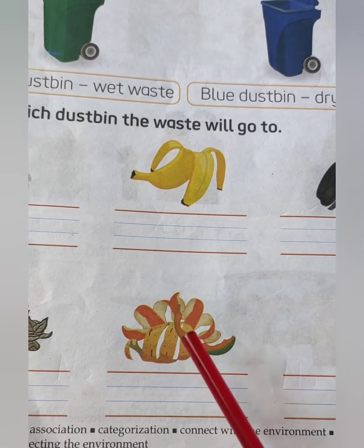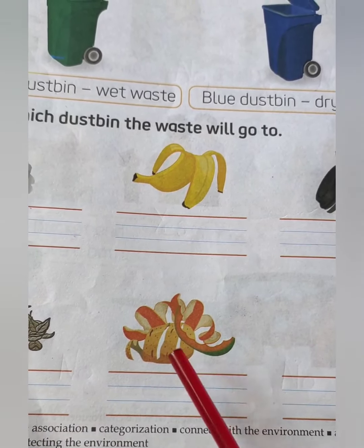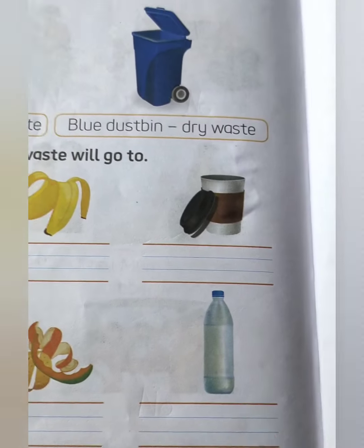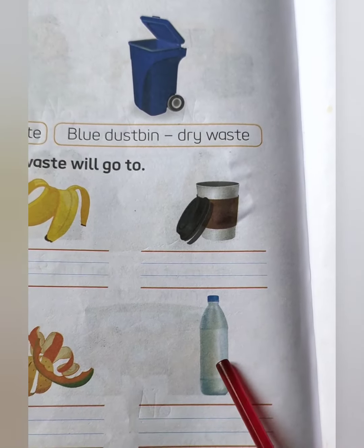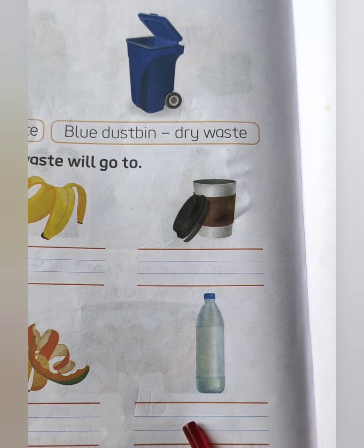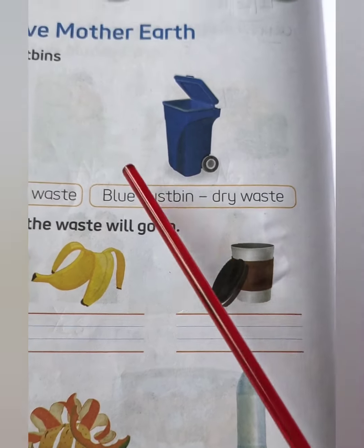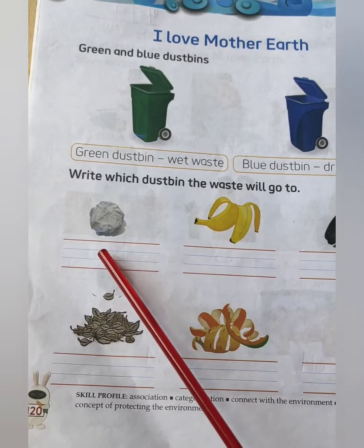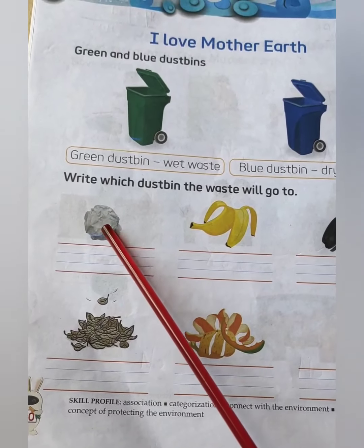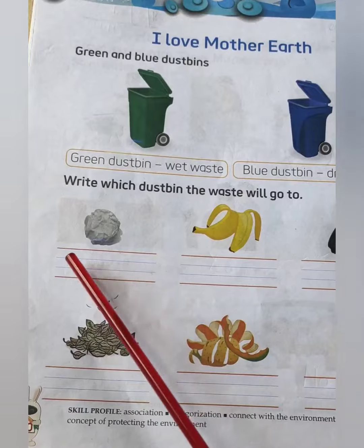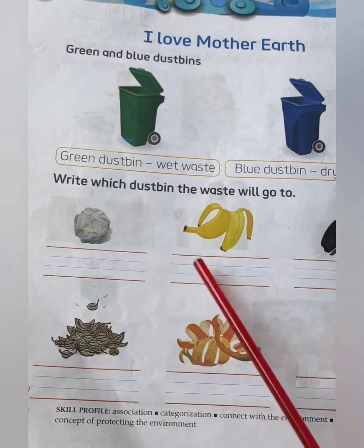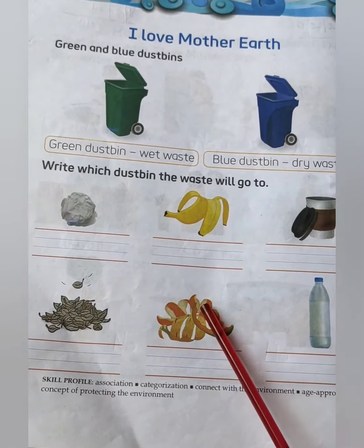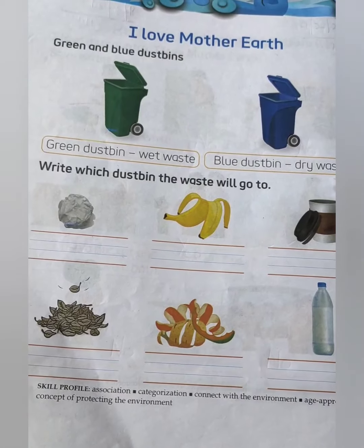These are peels of fruits and vegetables — this is wet waste, so it goes in the green dust bin. This is a plastic water bottle — plastic bottle goes in the blue dust bin. You have to write below the pictures which dust bin this kind of garbage will go in. Complete the homework and submit it to your teacher. Bye-bye children, have a nice day.